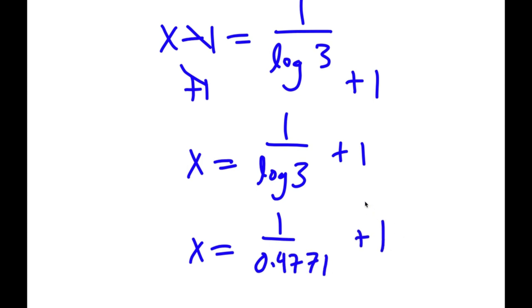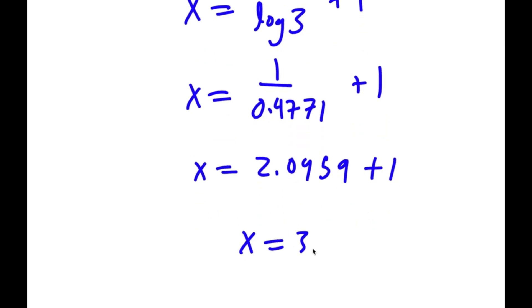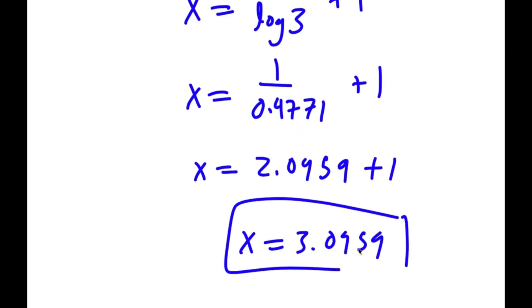So 1 over log 3, or 1 over 0.4771, that's going to be 2.0959. So I have this plus 1, and my final answer is x equals 3.0959.